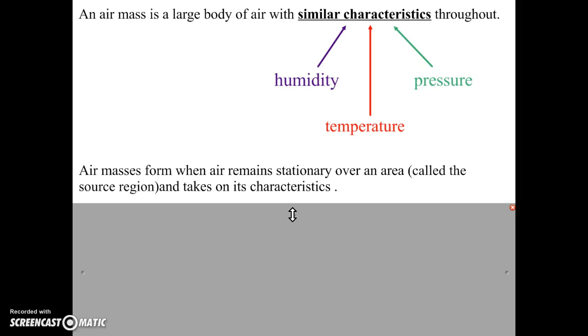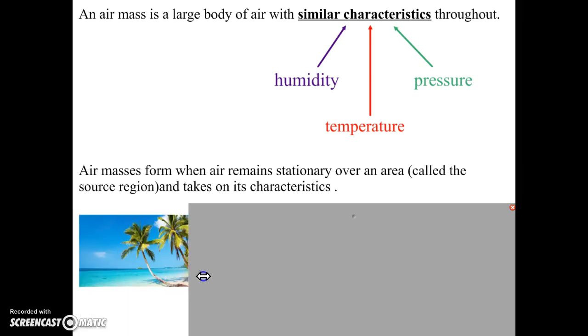The area of the Earth that it hangs out over is called the source region. And if air hangs over a source region, it will take on the characteristics of that region.